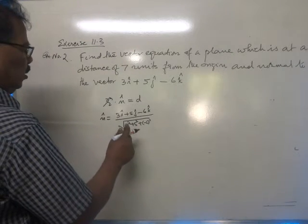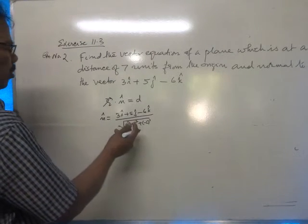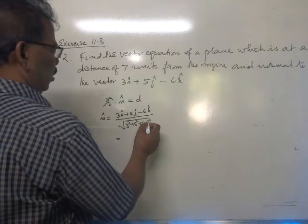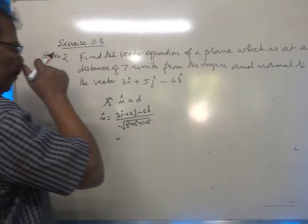That is 9 plus 25, 34 plus 36. That is 70.